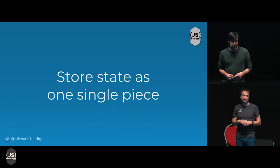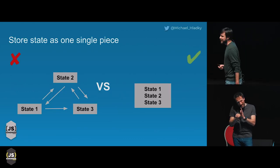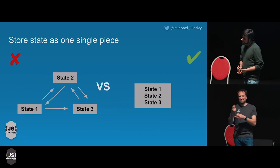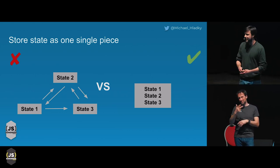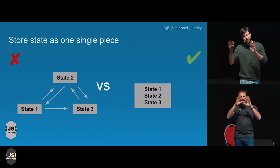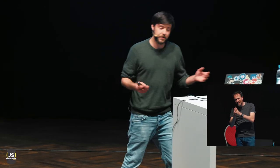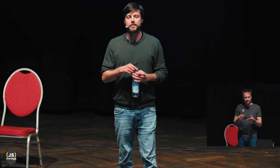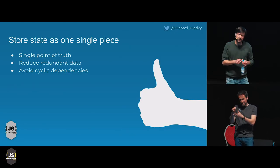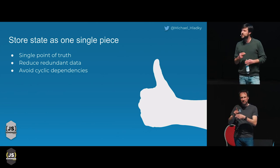The second principle is store state as one single piece. This is one of my favorite principles because I messed it up more than twice. You start with an application, you create a service that manages some data, you create another service that manages other data, and in the end you have complete chaos — no clue where you stored your state or how to get it. Storing state in one single piece gives you one single point where you can find everything. It helps you avoid cyclic dependencies and reduces the data that you store.